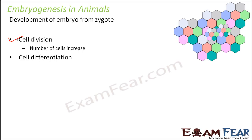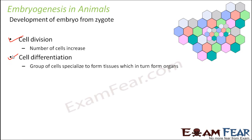Cell differentiation occurs where a bunch of cells group together and perform a specific function, forming a specific tissue which in turn forms a specific organ. For example, some cells aggregate and form the tissues that make up the heart; similarly, other tissues join together to make up the lungs. Cell differentiation is equally important as cell division. As a result of both processes, the zygote gradually develops into an embryo — this process is known as embryogenesis.